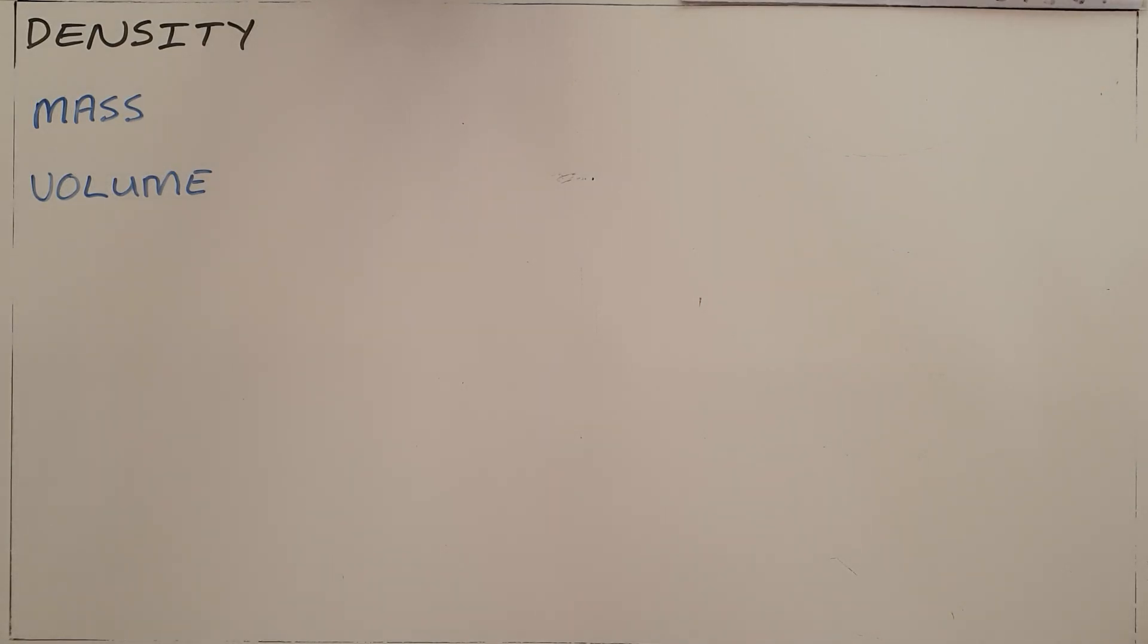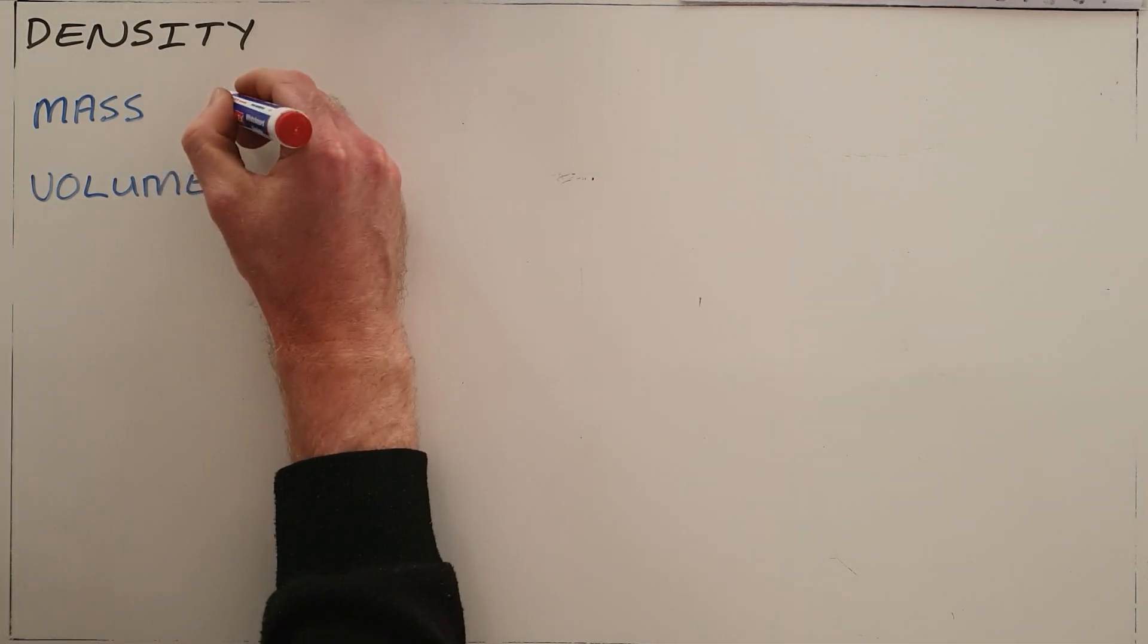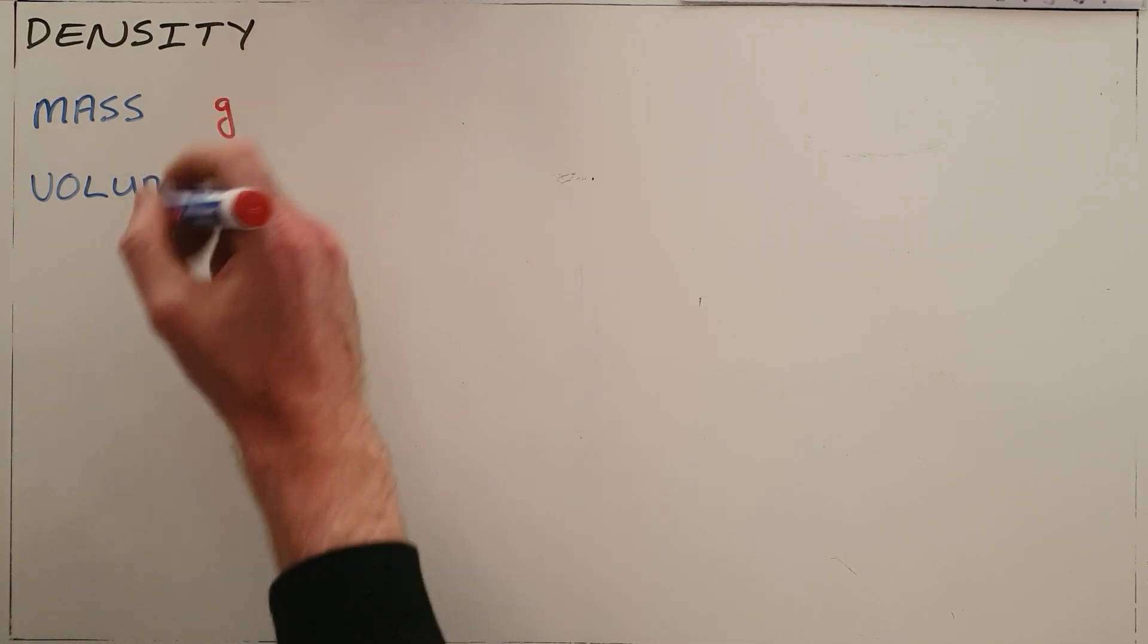We know that mass is a measure of the amount of matter in a substance, basically a measure of the number of particles that make up a substance. Mass can be measured in grams, or bigger substances would be measured in kilograms or tons.